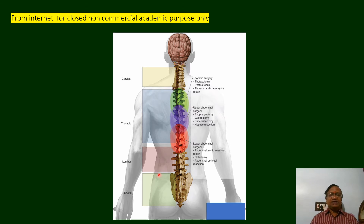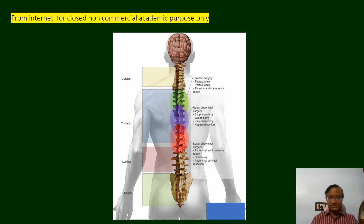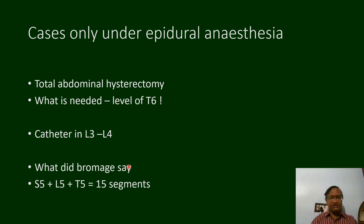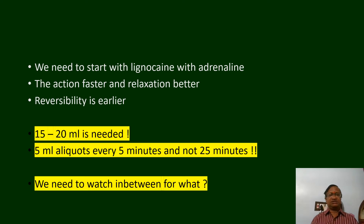Looking at dermatomal regions: sacral, lumbar, lower thoracic, and upper thoracic blocks are needed for esophagectomy, pancreatectomy, and hepatic resection, while lumbar blocks are needed for knee and hip surgeries. For a total abdominal hysterectomy under epidural only, we need a T6 level with the catheter at L3. As Brahmash states, we need to block five lower segments — at 1 to 1.5 ml per segment, we need to give approximately 18 ml.